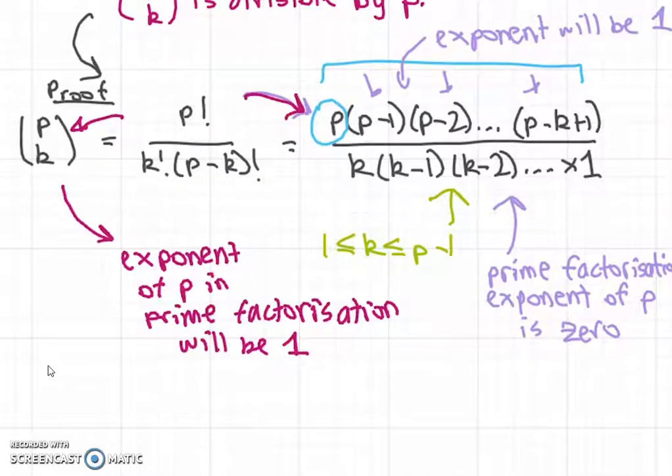has exponent of p at least one. By definition of the choose function, we know p choose k is an integer, which means p choose k is divisible by p.